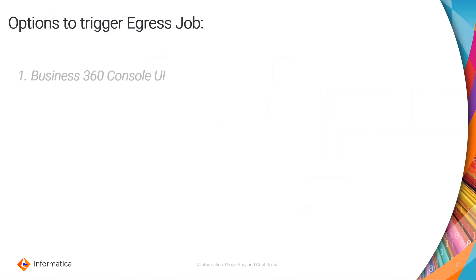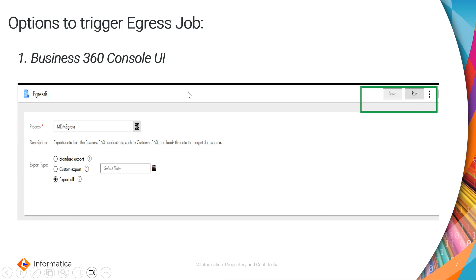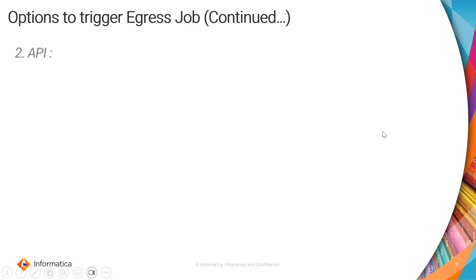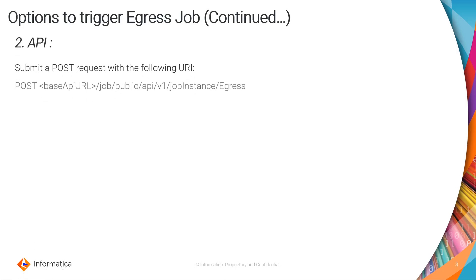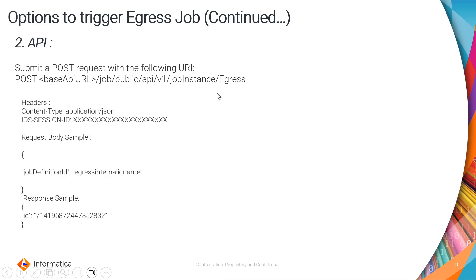The options to trigger the job are: first, through the console — after creating the job definition you can click Run. The second way is through an API where you make a POST call. The URL uses 'all' as a keyword and 'egress' as a keyword, with the body as the job definition ID. In the response you will get the new job ID that was kicked off.